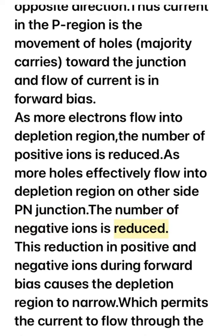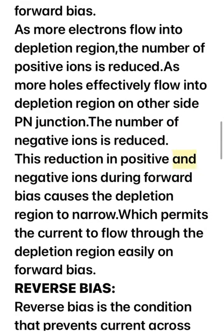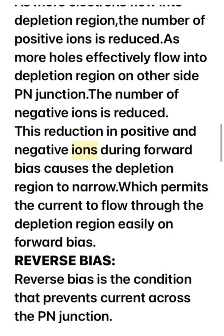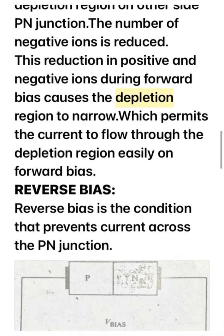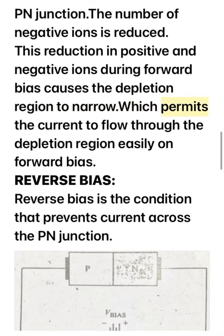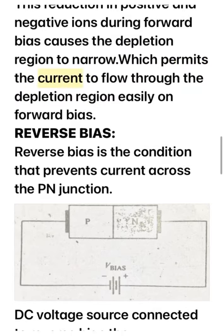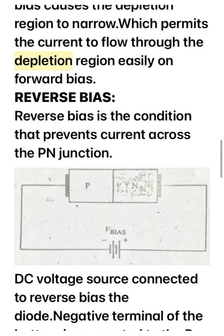This reduction in positive and negative ions during forward bias causes the depletion region to narrow, which permits current to flow through the depletion region easily under forward bias.